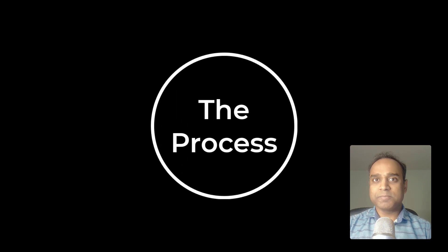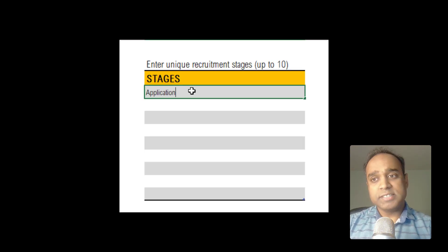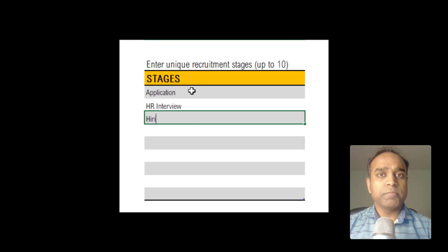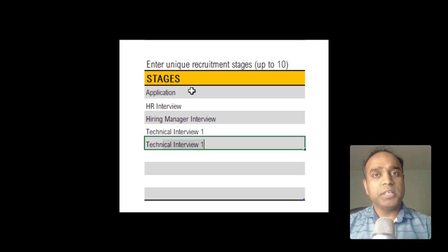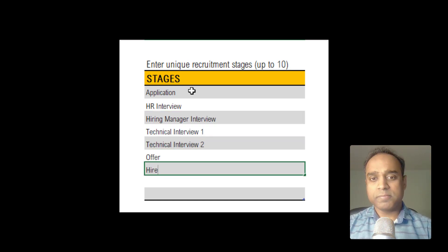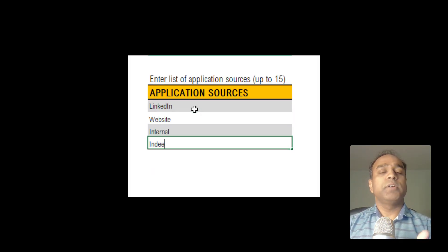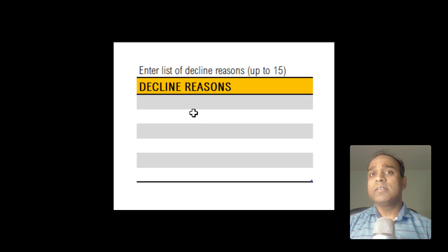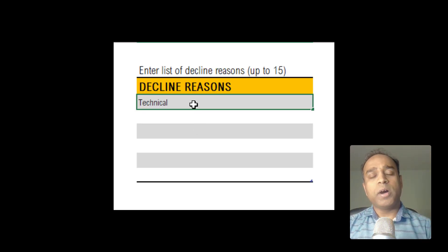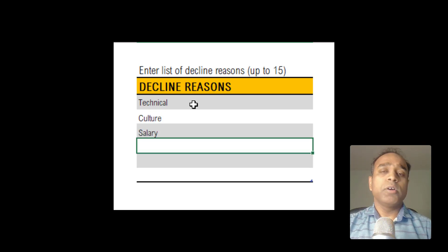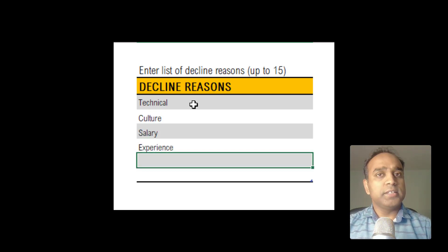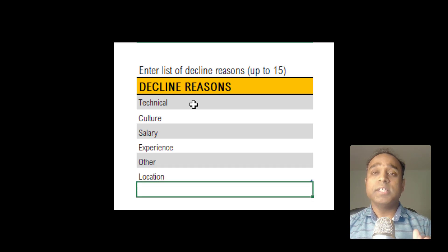Now let's start with the process. Step number one is defining your recruitment process. Define the stages in your recruitment process — I have entered in this example seven different stages. Customize this according to your company's recruitment process. Define the different sources through which you receive applications to your openings. Enter the reasons why you may decline applications, and also why candidates may decline your offer. This is a one-time setup.